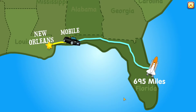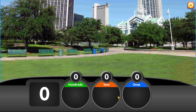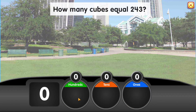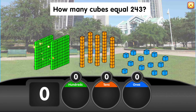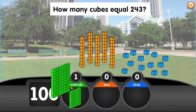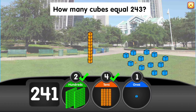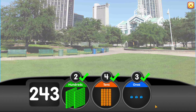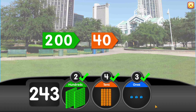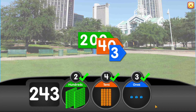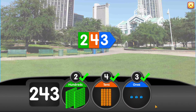Our next stop is 243 miles away. How many cubes equal 243? 200 plus 40 plus 3 equals 243.